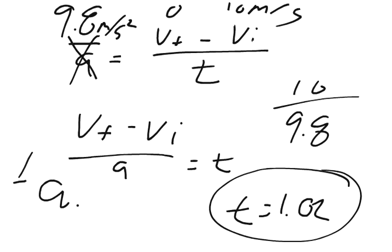One half of acceleration times time squared equals displacement. And so the acceleration is 9.8 meters per second squared. Times the time,